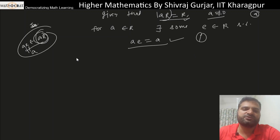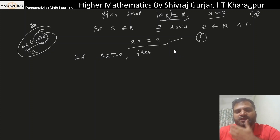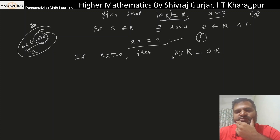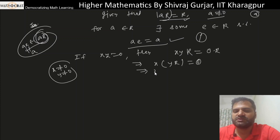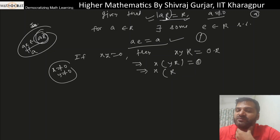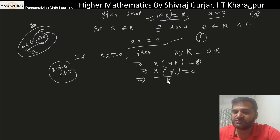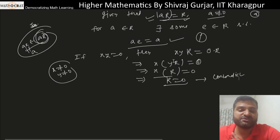Now if xy equals zero, and y is not zero, then yR equals R (since this condition holds for every non-zero element). So zero dot R means zero only, but xR equals R since x is non-zero, giving R equals zero, which is a contradiction — R has more than one element so it cannot be zero.